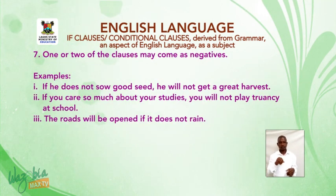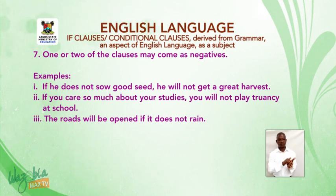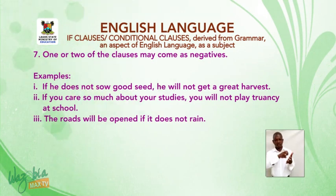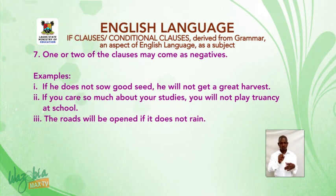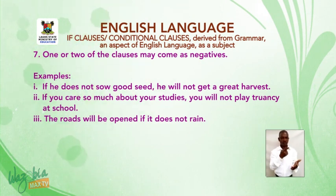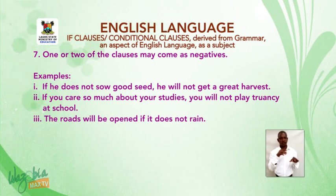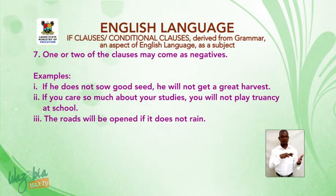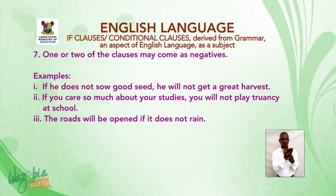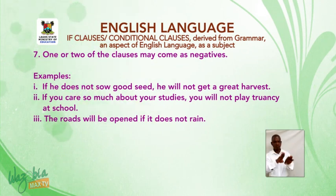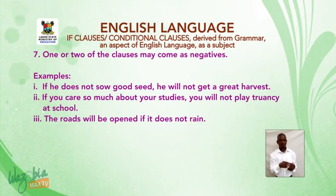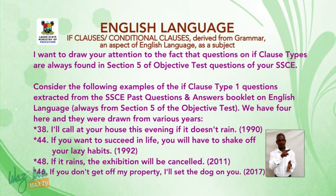Now we come to the last of the seven points: one or two of the clauses may come as negatives. Examples: one — 'If he does not sow good seed, he will not get a great harvest'; two — 'If you care so much about your studies, you will not play truancy at school'; three — 'The roads will be opened if it does not rain.'